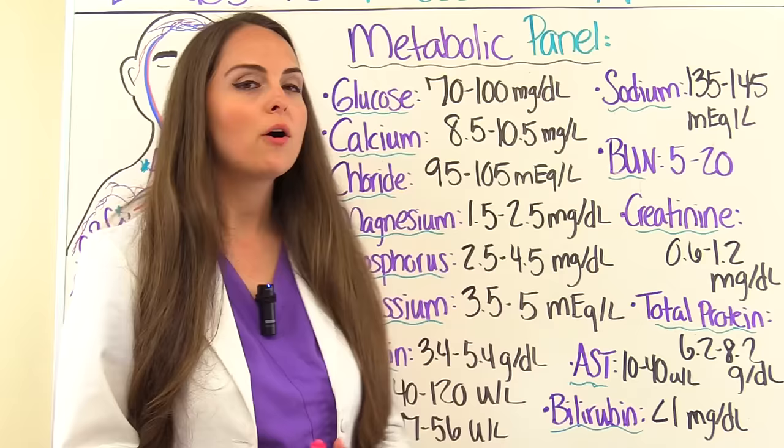Now let's look at the lipid panel, which tells us about our patient's risk for cardiovascular disease, looking at LDL, HDL, total cholesterol, and triglycerides. LDL — low-density lipoprotein — we want this value low: less than 100 milligrams per deciliter. HDL — high-density lipoprotein — we want this number high: greater than 60 milligrams per deciliter. How I remember it: the L in LDL stands for low, so we want that number low; the H in HDL stands for high, so we want that number high. Total cholesterol should be less than 200 milligrams per deciliter, and triglycerides less than 150 milligrams per deciliter.